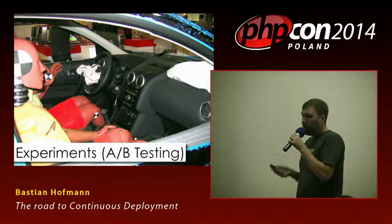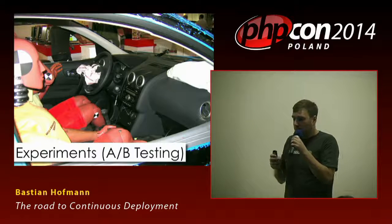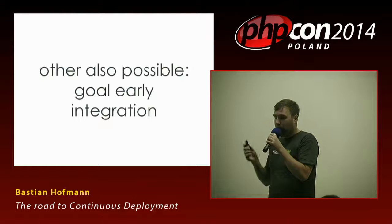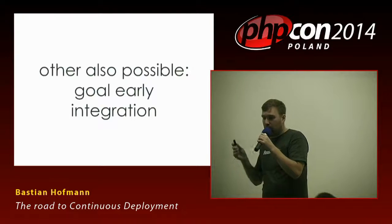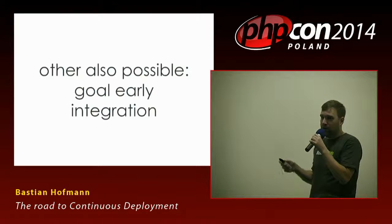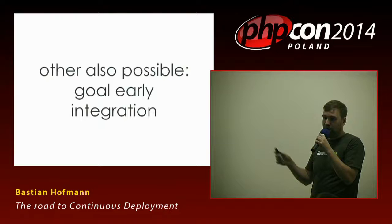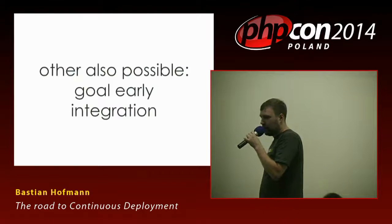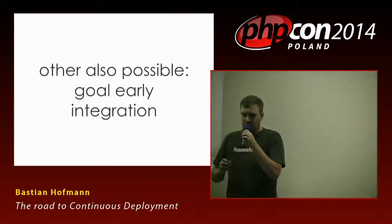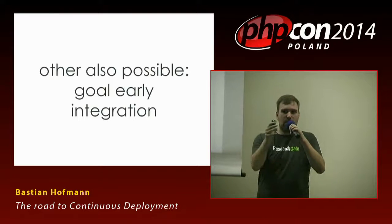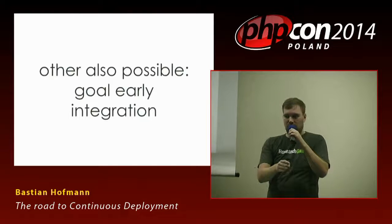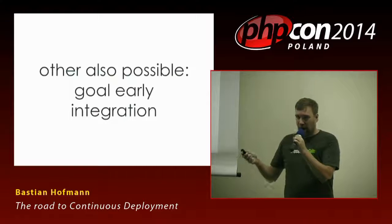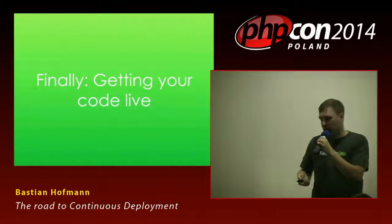The feature toggle approach is one way to handle continuous deployment. If you have other methods that work, great. The only goal should be to integrate all commits and everything developed as early as possible. So I've talked a lot about quality assurance, how important tests are for continuous deployment, and about development process. Now let's get our code live to our server.